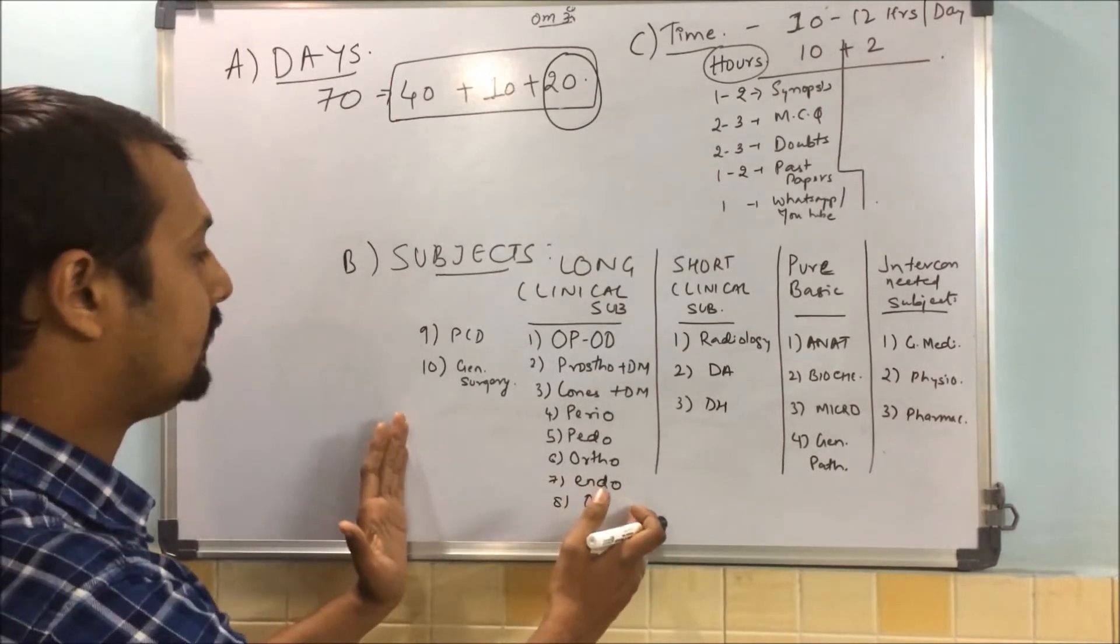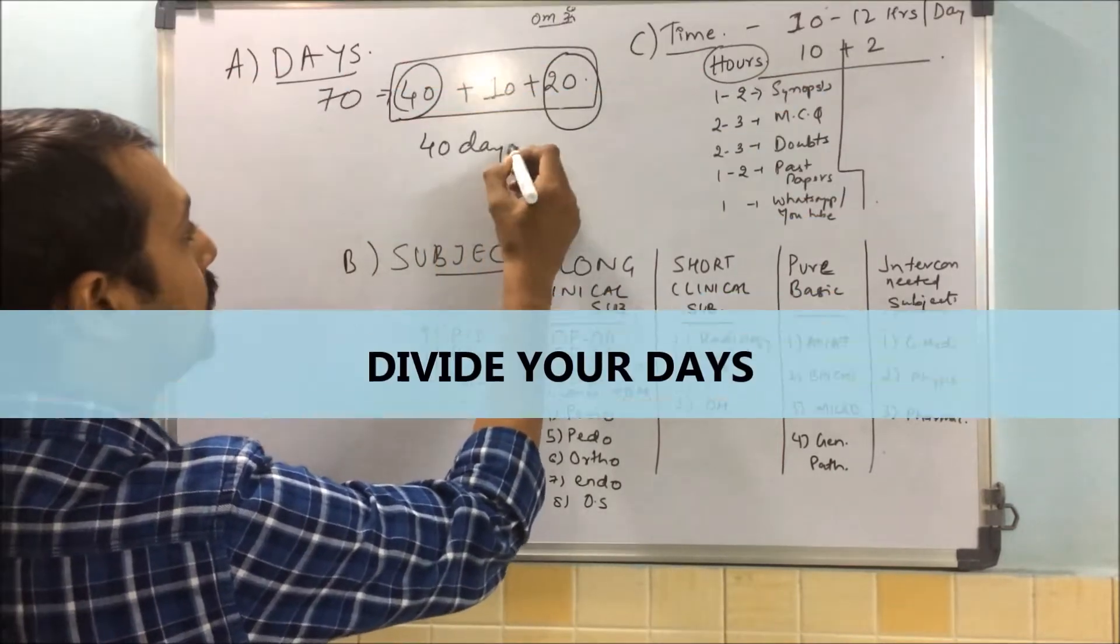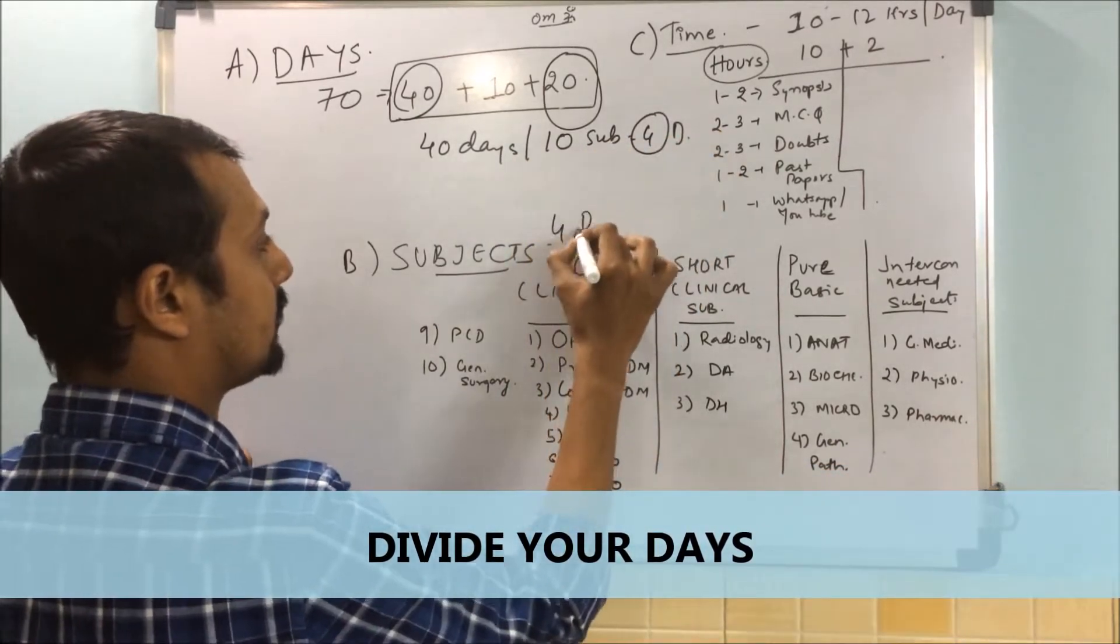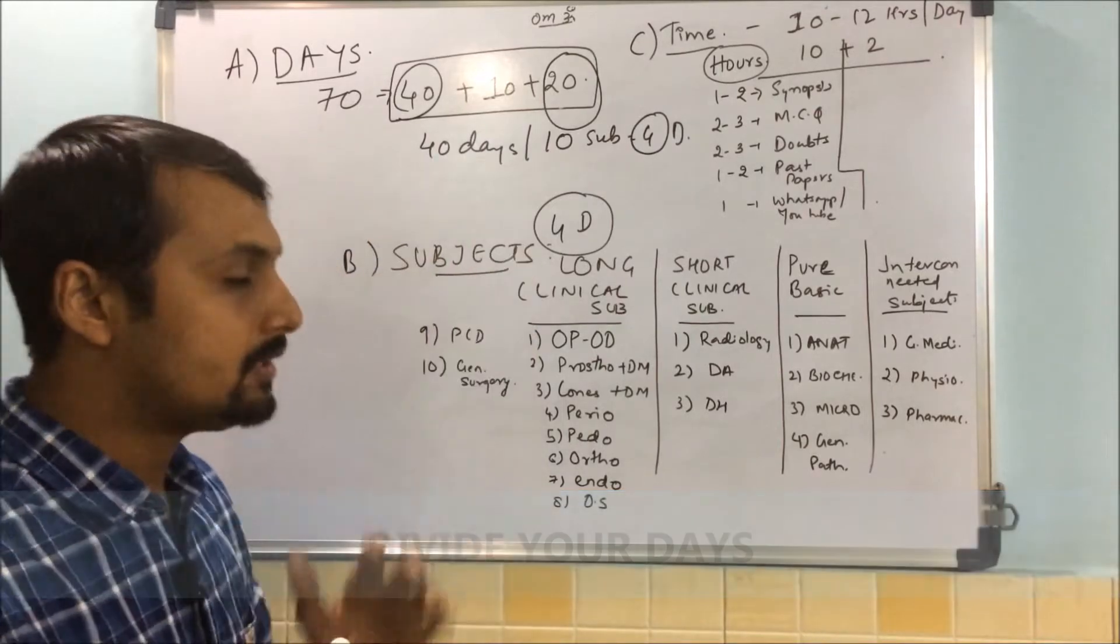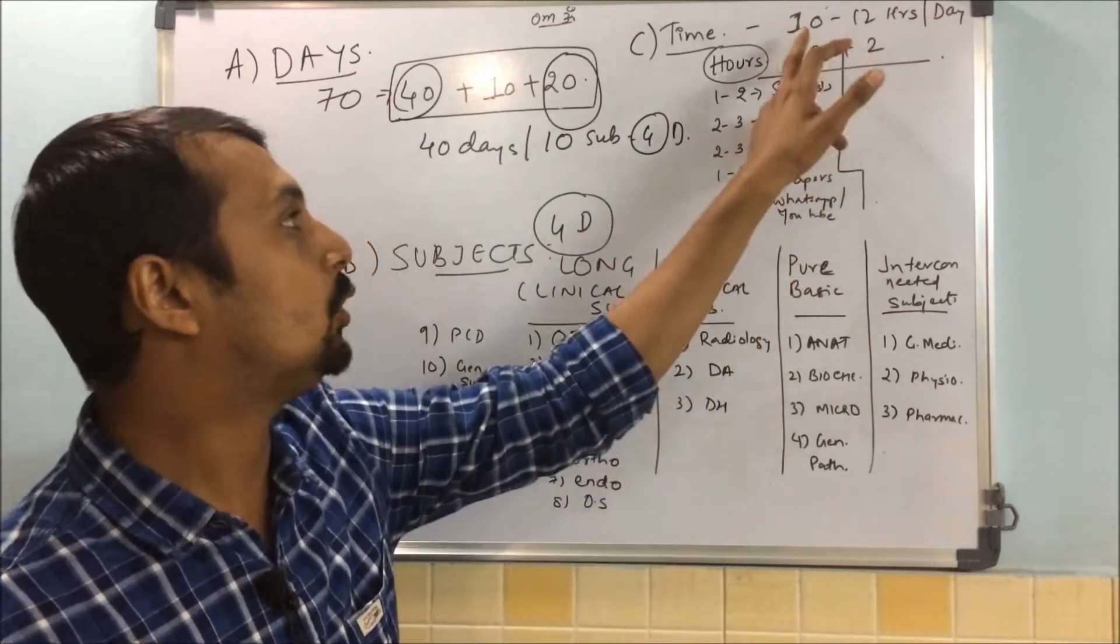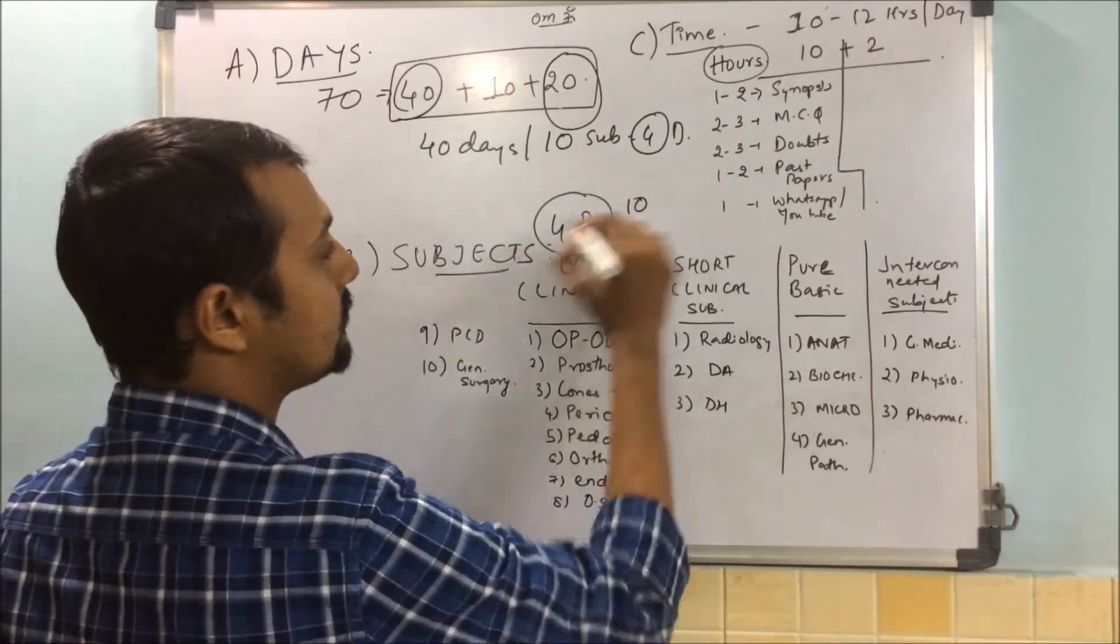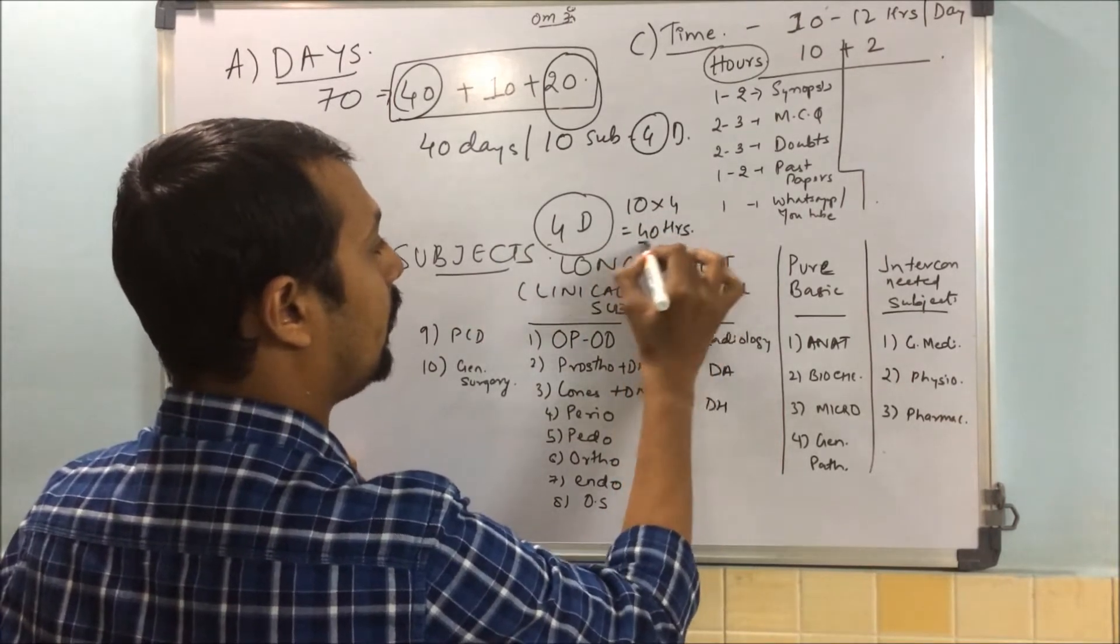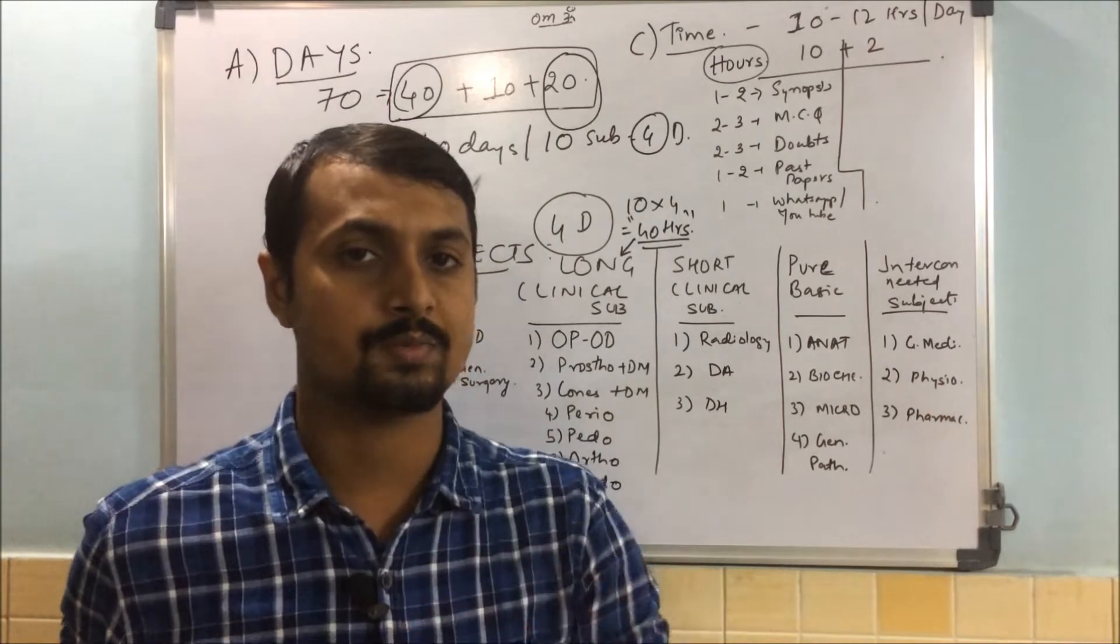NEET nowadays, all subjects have more about equal weightage. When you're going for examination, it is very important that you should have touched all subjects at least once through and through. We have divided these subjects in four parts. First, we'll take 10 long clinical subjects. We'll divide 40 days by 10 subjects, so we have four days per subject.